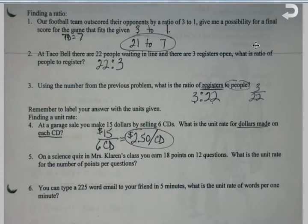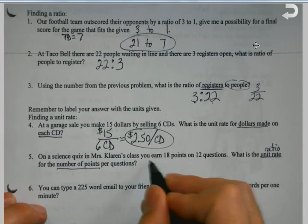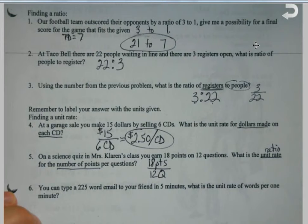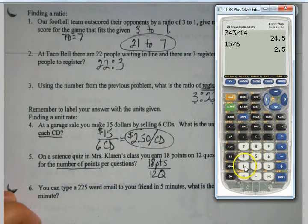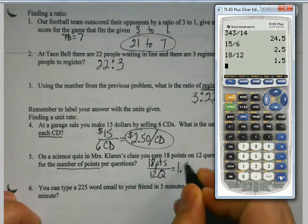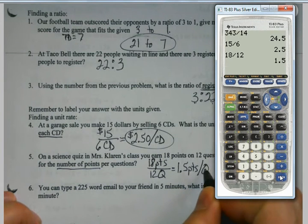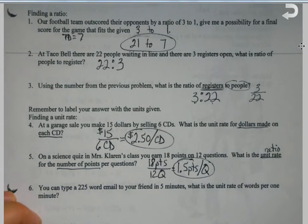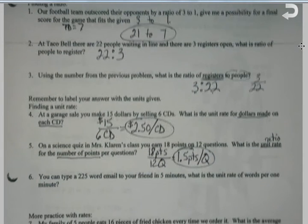On a science quiz, you earn 18 points on 12 questions. What's the unit rate? That's another way of saying ratio. For the number of points, 18 points per question, which means I get 1.5 points per question. You put the labels just like you did in the fraction. That's the whole thing of a ratio or a rate.